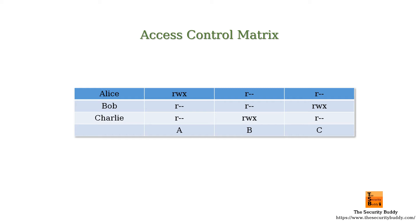Alice can read, write, and execute resource A, and only read resources B and C. Similarly, Bob can only read resources A and B, but can read, write, and execute resource C, and so on.